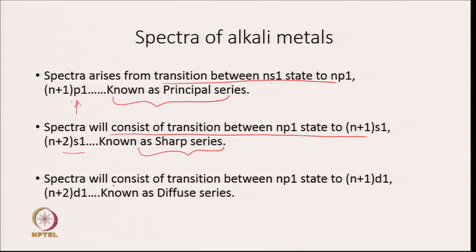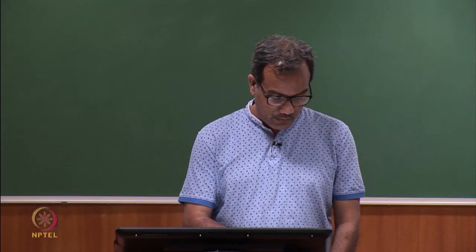Spectra can also have contributions from transitions between Np¹ to (N+1)d¹ or (N+2)d¹ states. Since electrons are landing in the d state, it is known as the diffuse series. The transition from Ns¹ to (N+1)d¹ is not allowed since delta L is +2, so transitions from S state to D state are forbidden.